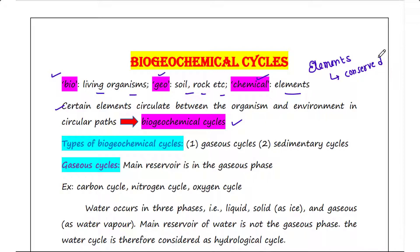Since elements can neither be created nor destroyed, these are recycled in various ways. Let's talk about types of biogeochemical cycles. There are two types: first is the gaseous cycles, and second is the sedimentary cycles.